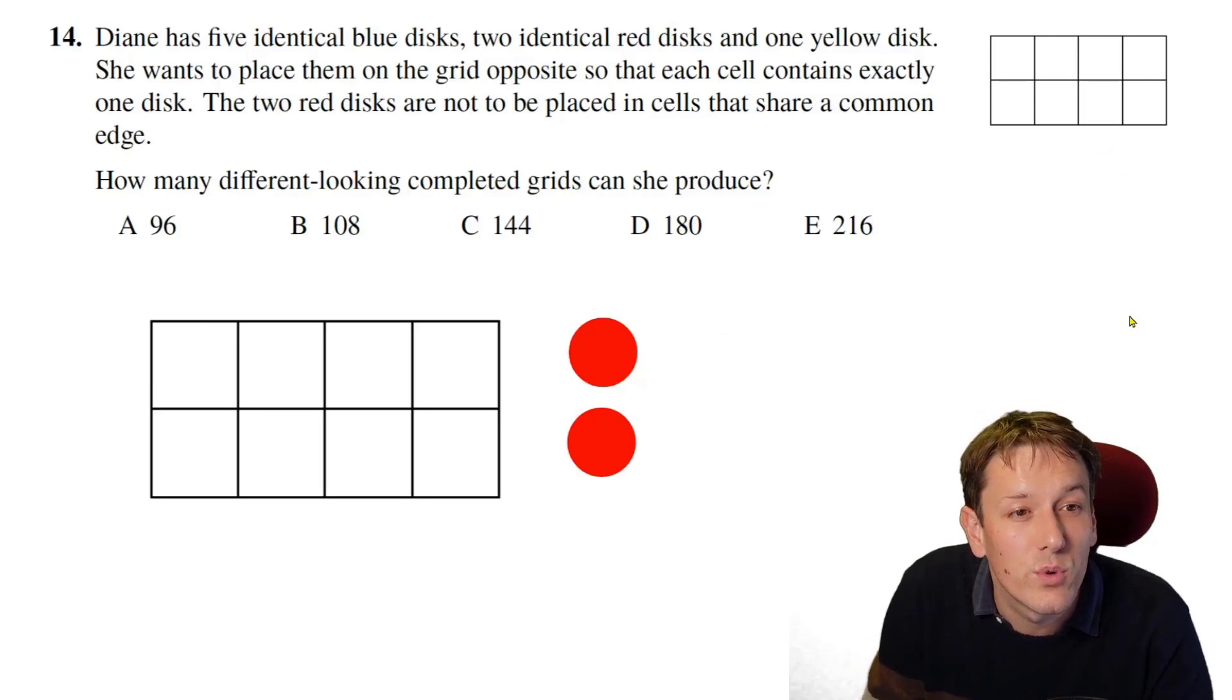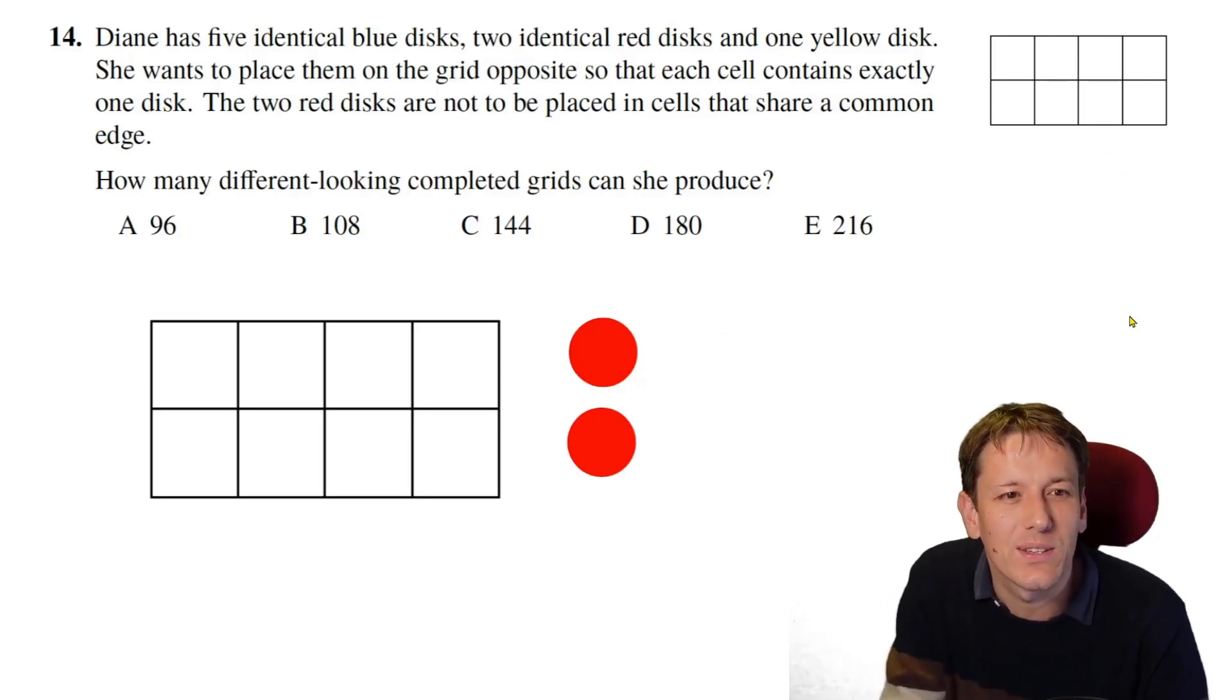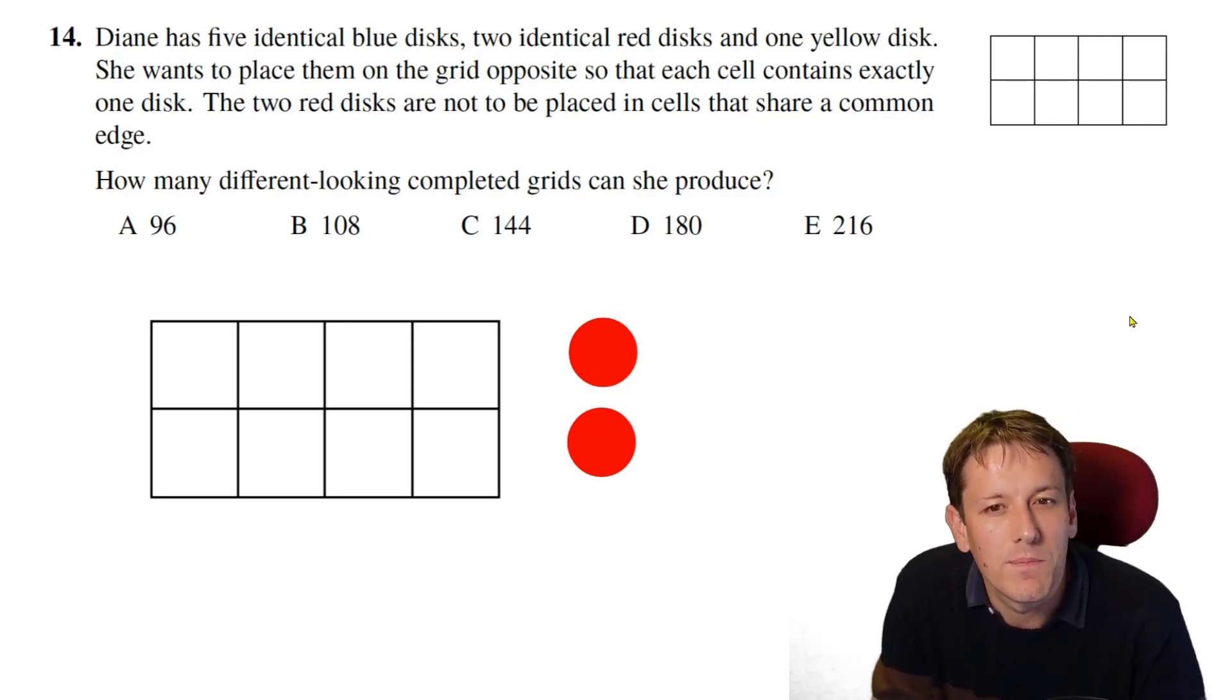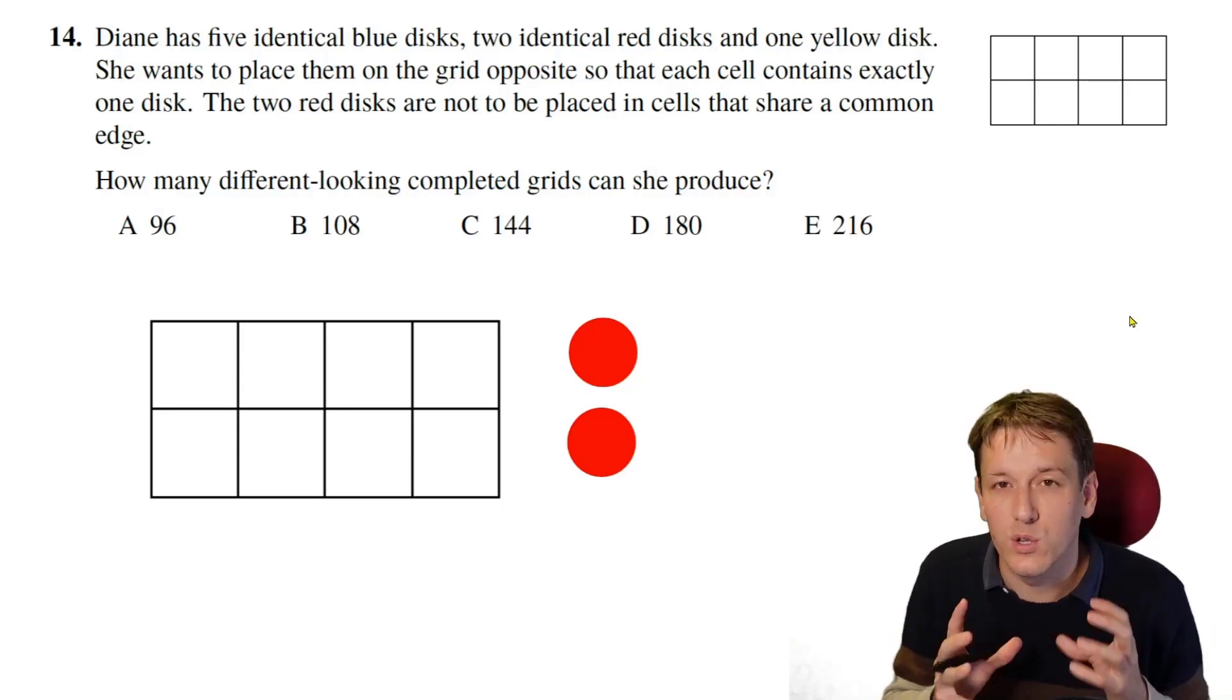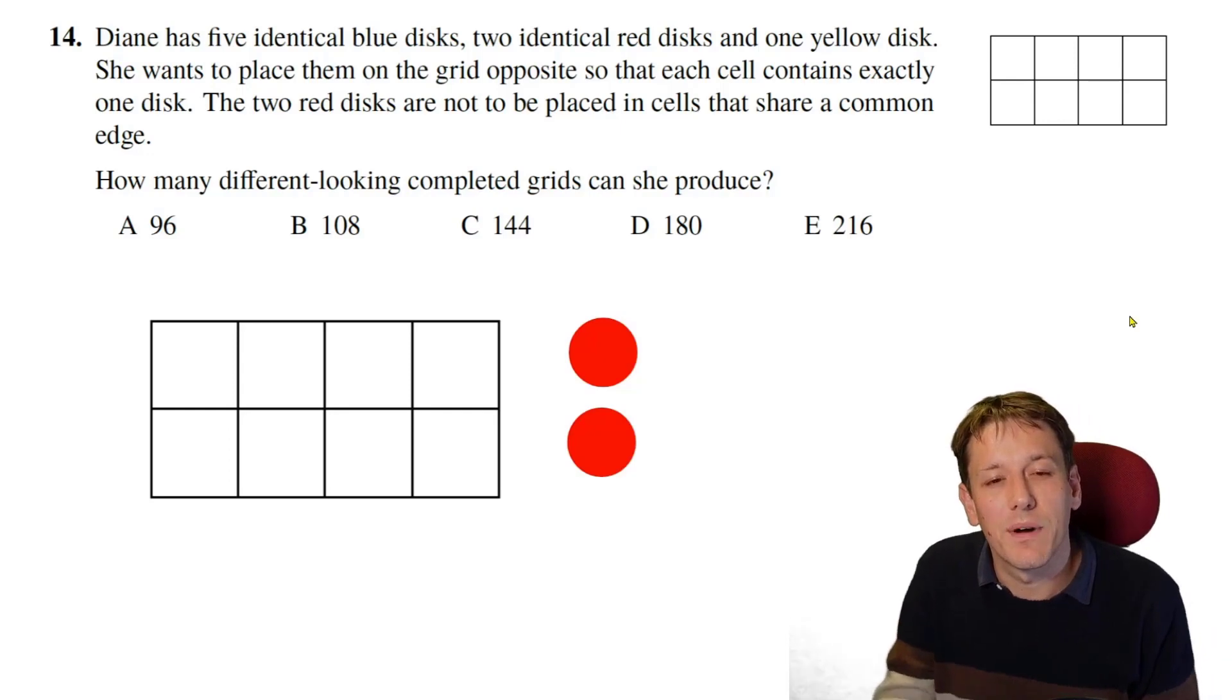So in question 14, Diane's got 5 identical blue disks, 2 identical red disks, and 1 yellow disk. And she's going to place them in this grid, and I've just made a bigger copy of this down here. So there's 1 of these disks in each cell. The 2 red disks can't be placed in cells that have a common edge. Now I think the key to this question is because there's this restriction on the red disks, it makes sense to start by thinking about where the red disks go.